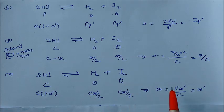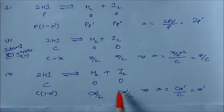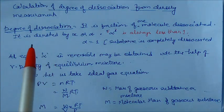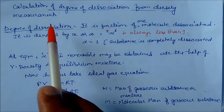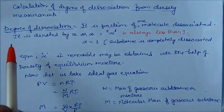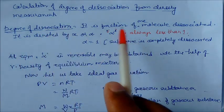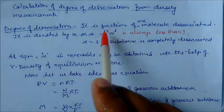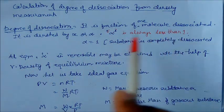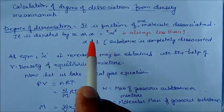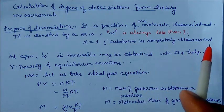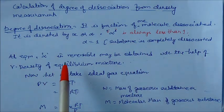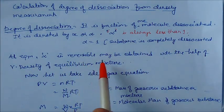Better to take the standard case to get the proper result. Now we look at the formation of degree of dissociation from density measurement. Degree of dissociation is the fraction of one molecule dissociated, denoted by alpha, and alpha is always less than 1. If alpha equals 1, the substance is completely dissociated.